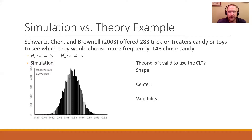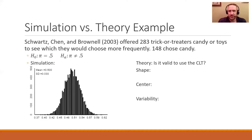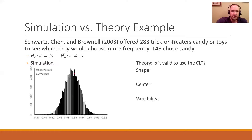Schwartz, Chen, and Brownell in 2003 offered 283 trick-or-treaters candy or toys to see which they would choose more frequently. They were interested to find out: can we at Halloween time not give out so much candy — are kids just as happy with toys? So they offered one or the other to see which one the kids would choose. Their null hypothesis said the proportion of success — here defined as choosing candy — is 50%. In other words, kids are just picking candy or toys 50-50. Alternatively, they said the proportion choosing candy is not 50%. So they didn't say higher or lower, just not 50. First, can we even use a theory-based approach? Is it valid? We need at least 10 successes — here they report 148 successes, so that's plenty on that side. For 10 failures — those who chose toys — that would be 283 minus 148, which is 135 chose toys. So plenty on both sides to use the central limit theorem.